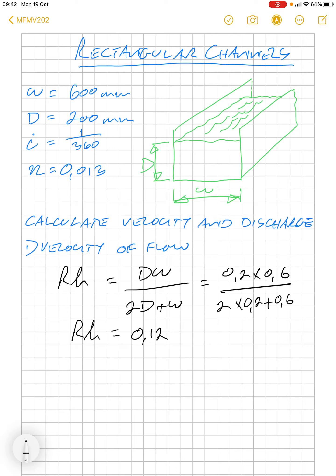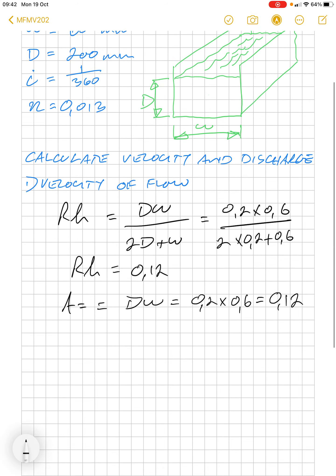The cross-sectional area is dw, which is 0.2 times 0.6, which also equals 0.12 in this case.